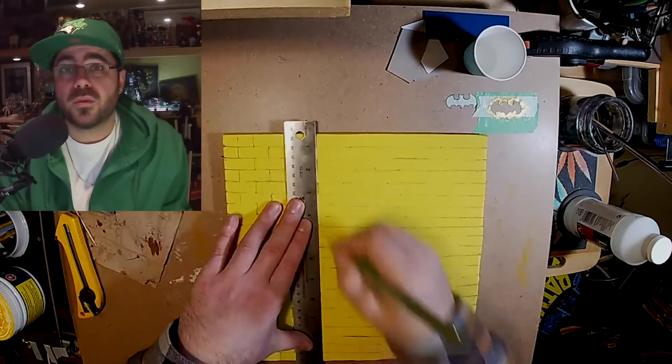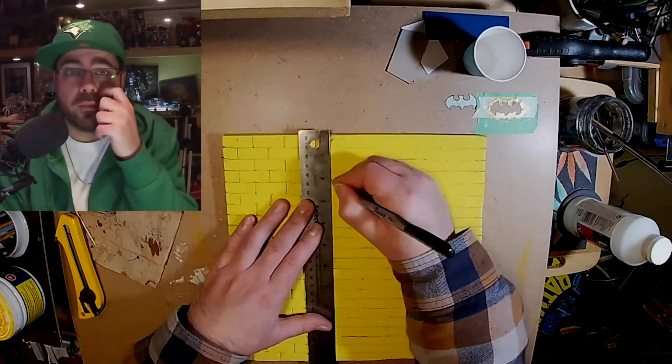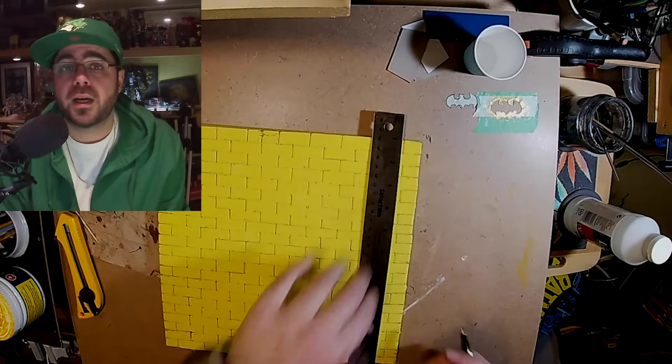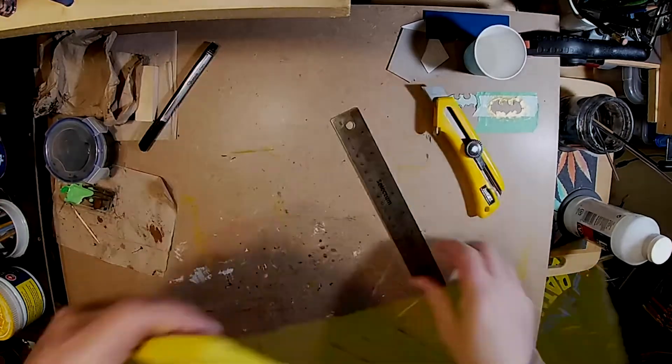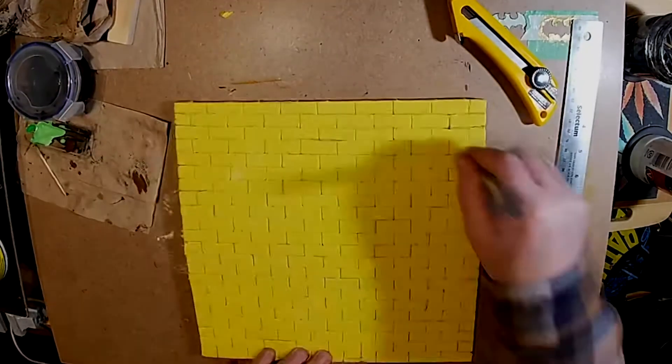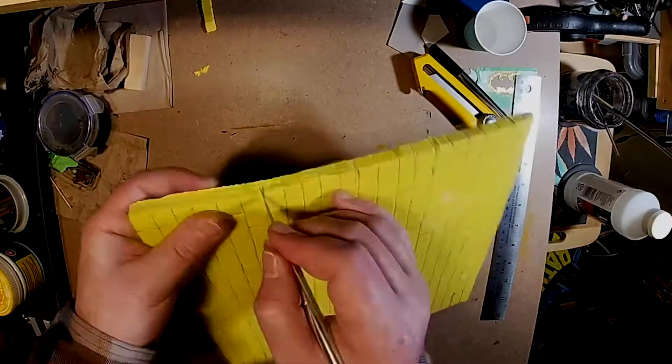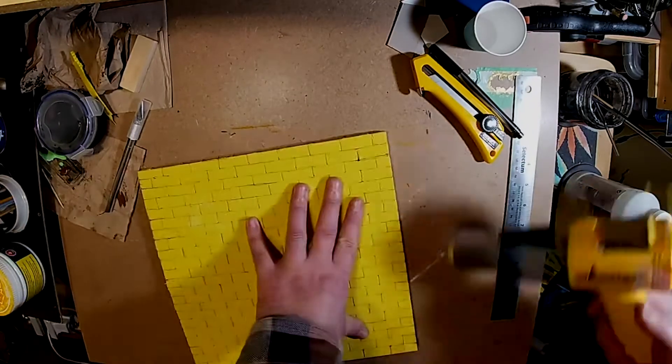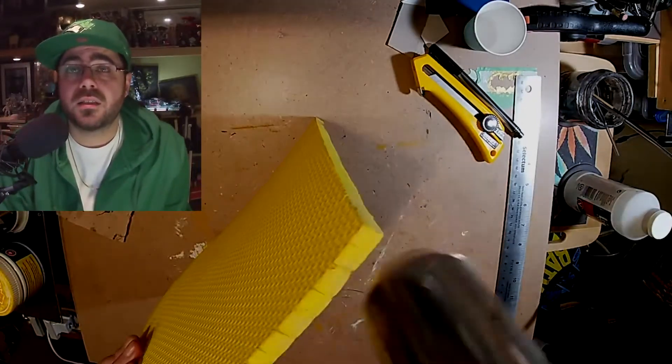This wall is gonna be green and yellow. I already made a red brick wall in tenth scale that's gonna be on the other side of this. So after I scored it all with a sharp pen, I'm hitting it with the heat gun to open up all the grooves.